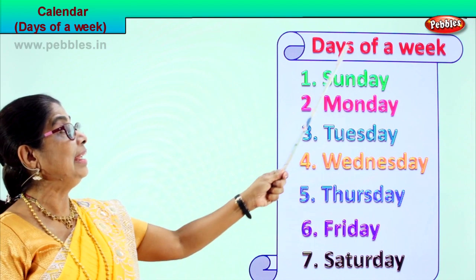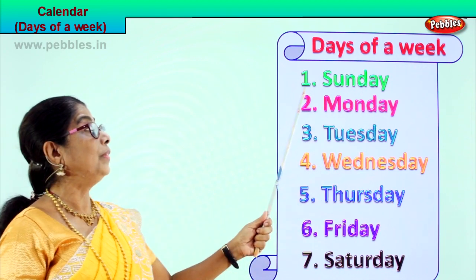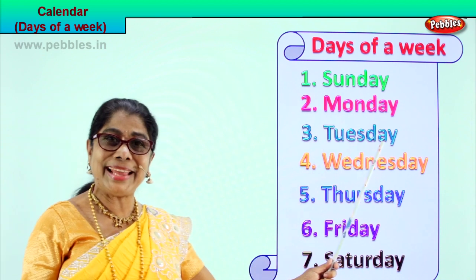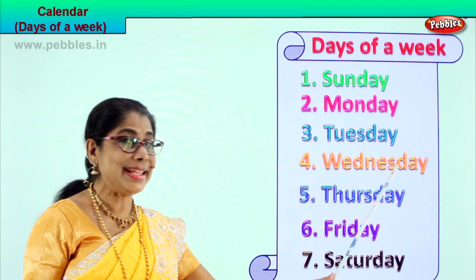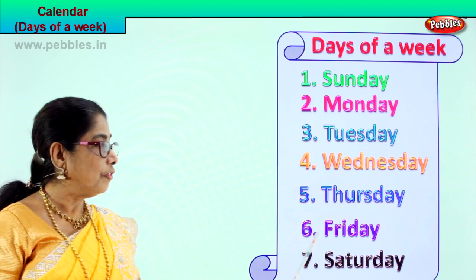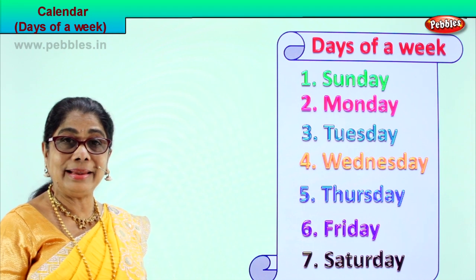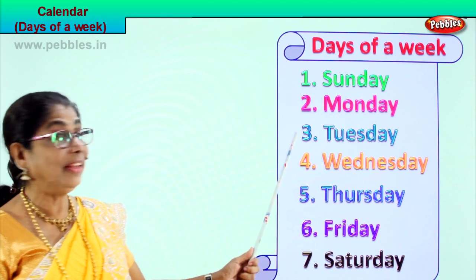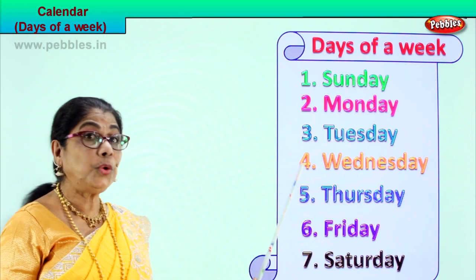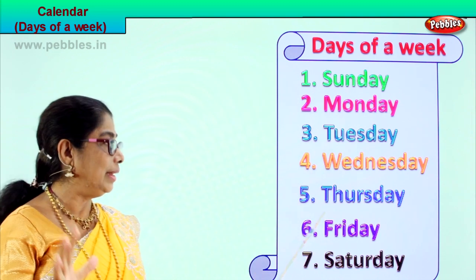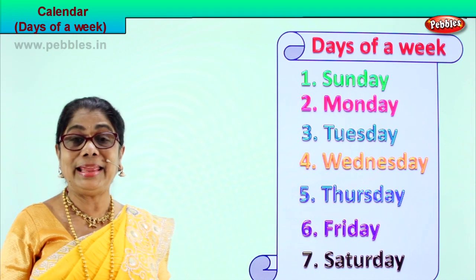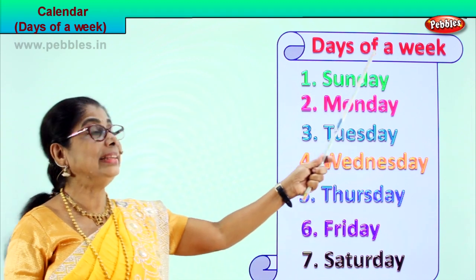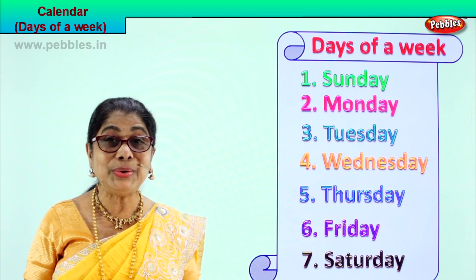Read this for me. Days of a week: first Sunday, next Monday, next Tuesday, next Wednesday, next Thursday, Friday and Saturday. In ordinal form: first Sunday, second day Monday, third day Tuesday, fourth day Wednesday, fifth day Thursday, sixth day Friday, and the seventh day is Saturday. These are the seven days of a week and you learned the spelling too.